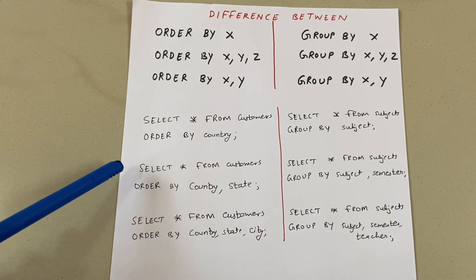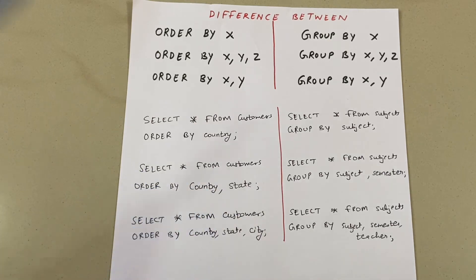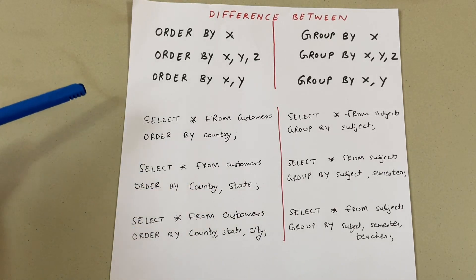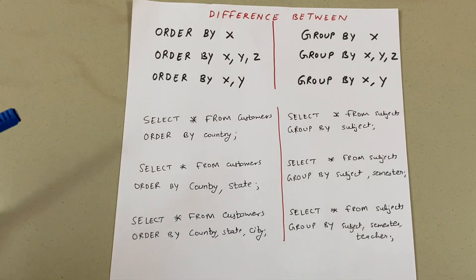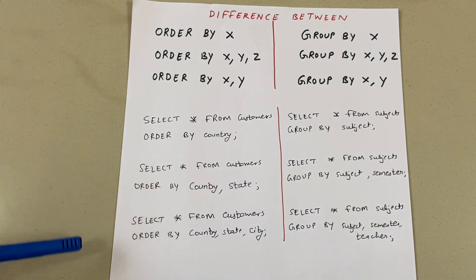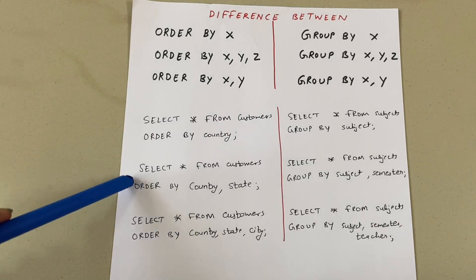The second example: SELECT * FROM customers ORDER BY country, state. Obviously there is a possibility that two customers — in fact 50, 60, or any number of customers — can be from the same country. So how are you going to sort the output in that case?